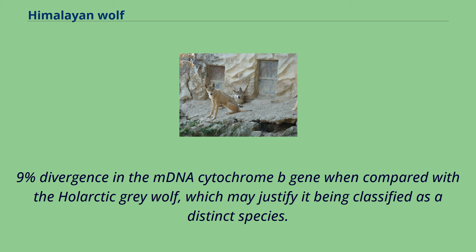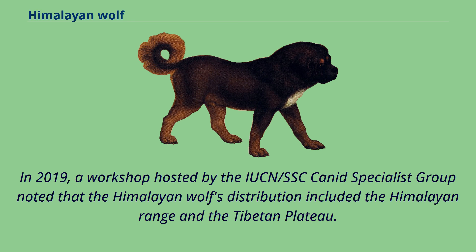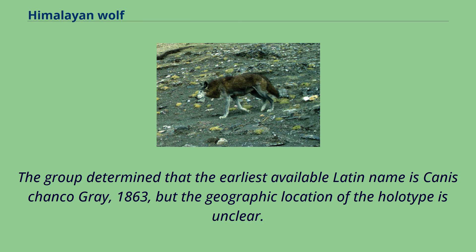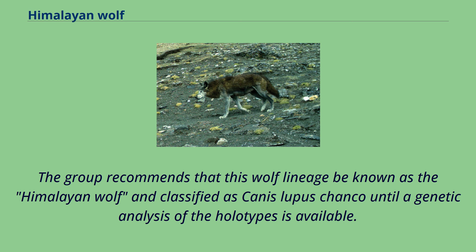In 2019, a workshop hosted by the IUCN-SSC Canid Specialist Group noted that the Himalayan wolf's distribution included the Himalayan range and the Tibetan plateau. The group determined that the earliest available Latin name is Canis chanco Gray, 1863, but the geographic location of the holotype is unclear. The group recommends that this wolf lineage be known as the Himalayan wolf and classified as Canis lupus chanco until a genetic analysis of the holotypes is available.